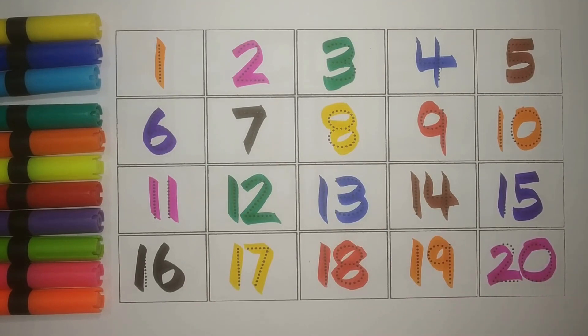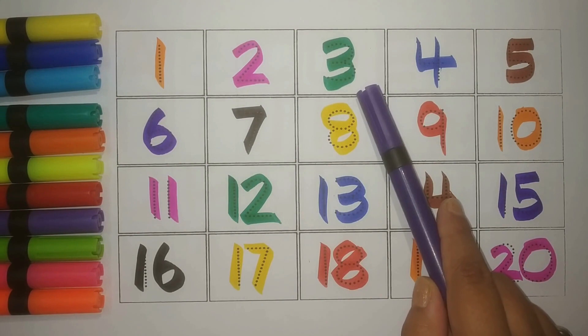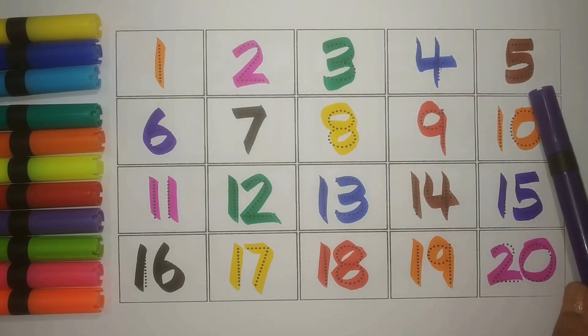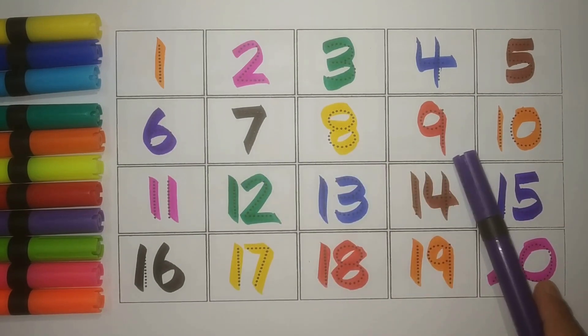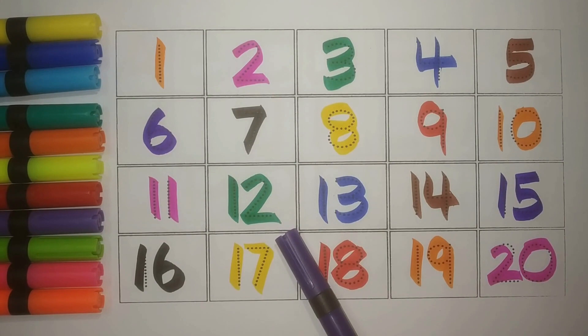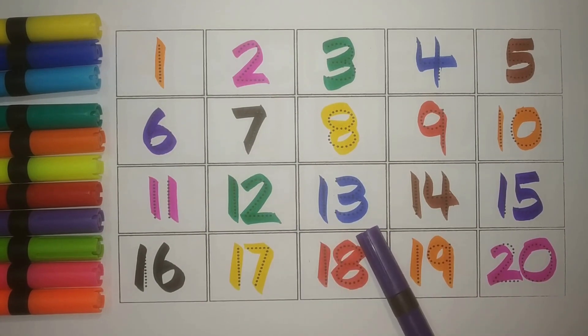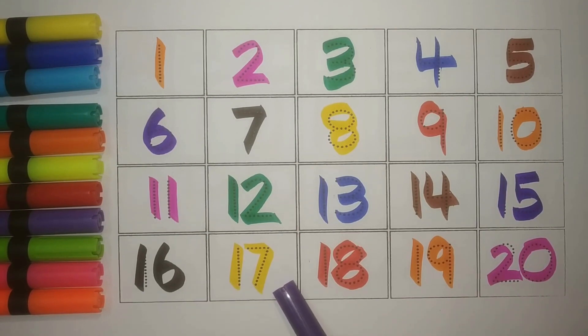Let's revise. Let's revise. 1, Orange. 2, Pink. 3, Green. 4, Blue. 6, Purple. 7, Black. 8, Yellow. 9, Red. 10, Orange. 11, Pink. 12, Green. 13, Blue. 14, Brown. 15, Purple. 16, Black. 17, Yellow. 18, Red. 19, Orange. And 20, Pink. Simple.